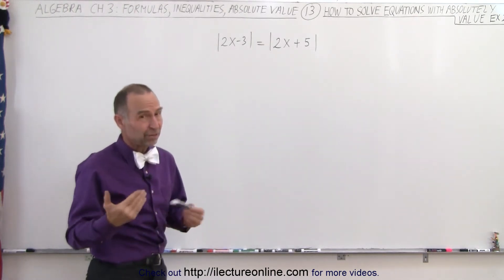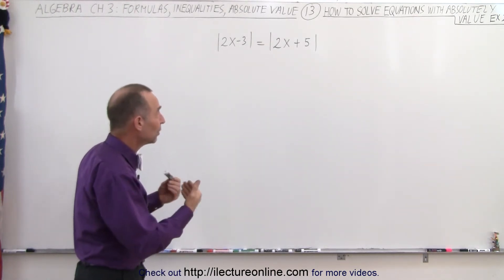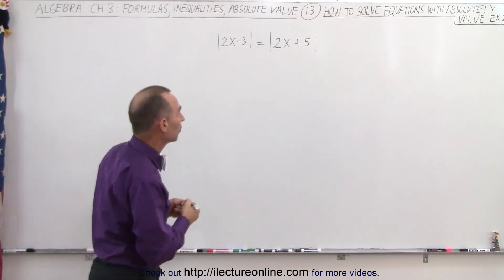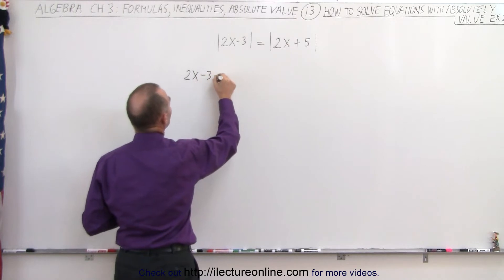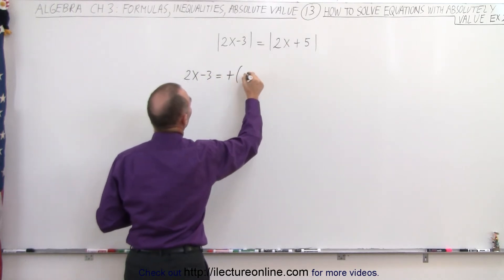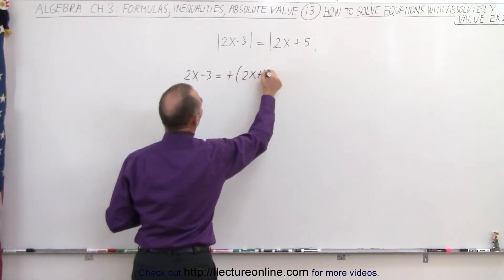Of course, we always need to check to make sure that the answers we get do indeed satisfy the equation. So in this case, we're going to say 2x minus 3 equals the positive of the 2x plus 5.